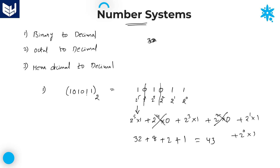So 101011 base 2, which is the given binary number, is equal to 43 base 10 in the decimal number system. You need to mention the base value 10 for decimal. This is the way of converting binary to decimal — the first conversion.